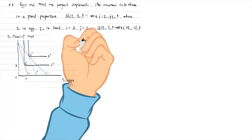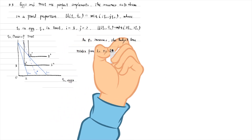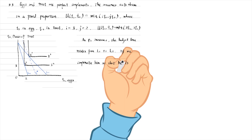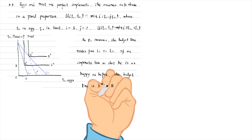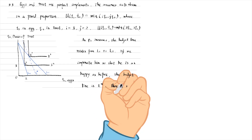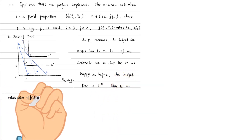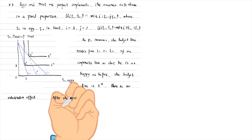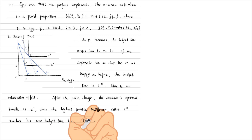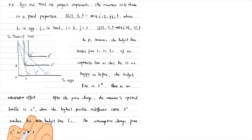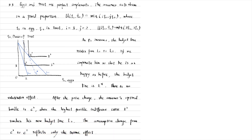The indifference curves are right angles. If the price of eggs increases, the budget line rotates from L1 to L2. If we compensate him so that he is as happy as before, the budget line should go through the original bundle E1, as the dashed budget line L-star shows. It indicates that there is no substitution effect of the price increase. After the price change, the consumer's optimal bundle is E2 where the highest possible indifference curve I2 touches his new budget line L2. The total effect from E1 to E2 equals the income effect — the consumption change reflects only the income effect of the price change.